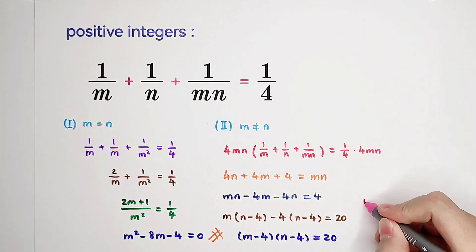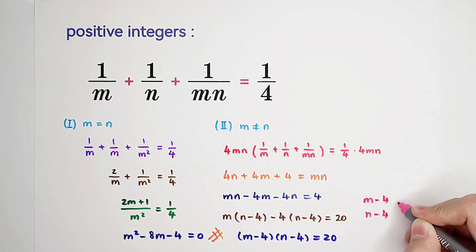20 is an integer. So m minus 4 and n minus 4 have to be the factors of 20. n is a positive integer. So n minus 4 is greater than or equal to minus 3. m minus 4 as well. So then we can factor 20.